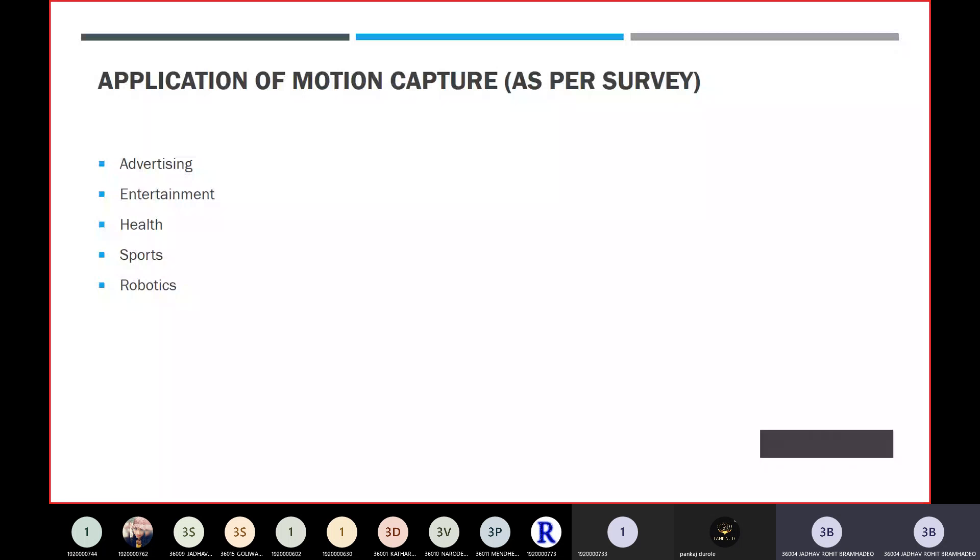In health, they can use motion capture. For example, if there is an old person and you want to find out where that person has pain in their body, you can use motion capture and analyze where that person feels pain. In sports like football, they can use motion capture to analyze how a human actually moves and how their body behaves while playing. In robotics, motion capture can be used to train robots how to behave, how to move, and how to work in our environment.